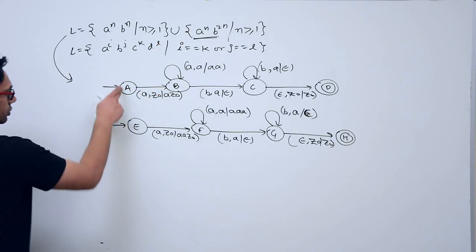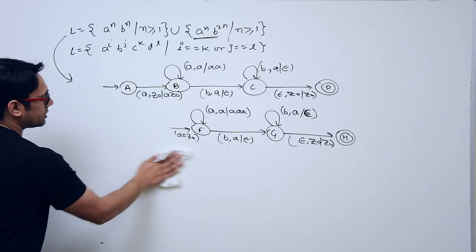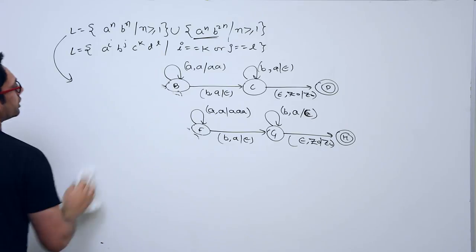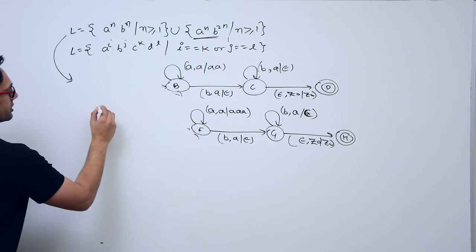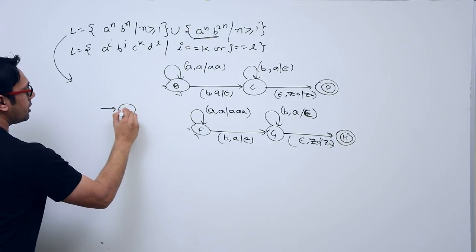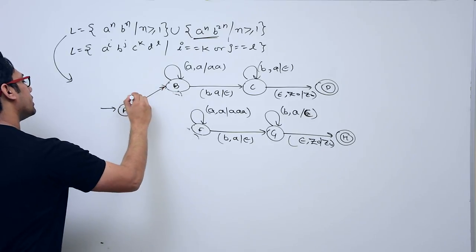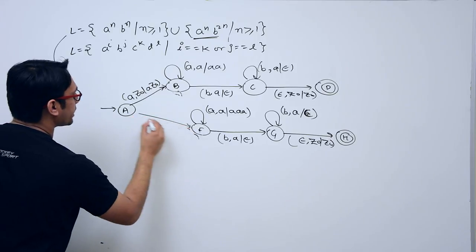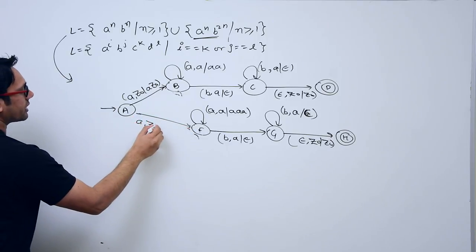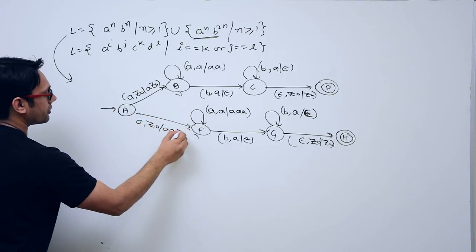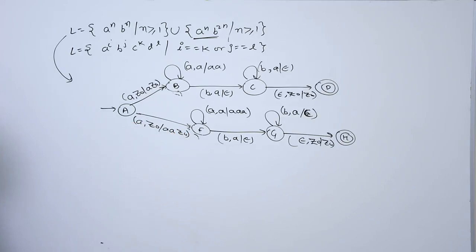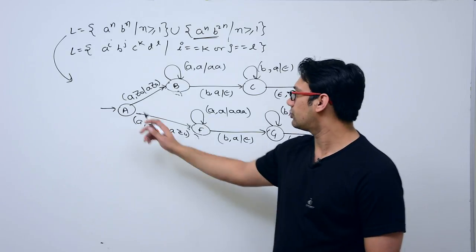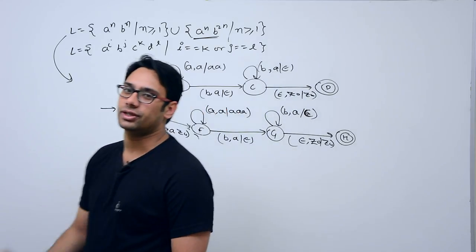To combine them, you make one initial state 'a'. On this initial state, if you get an 'a' and the stack contains z-naught, the first copy pushes one 'a', and the second copy pushes two a's — two different transitions for the same symbol. The one which makes the correct transition will accept that particular string.